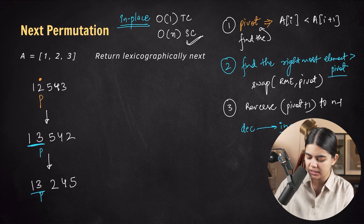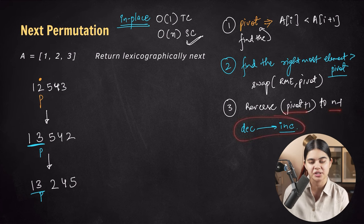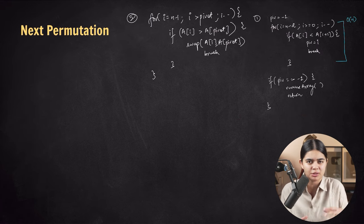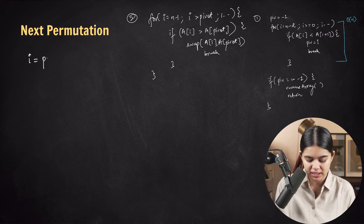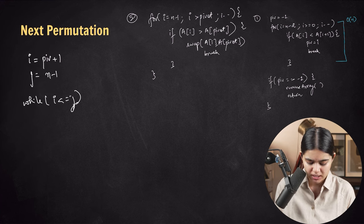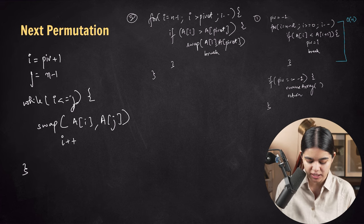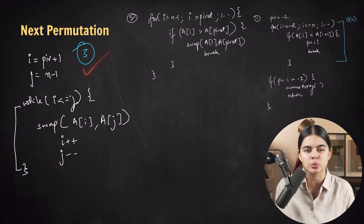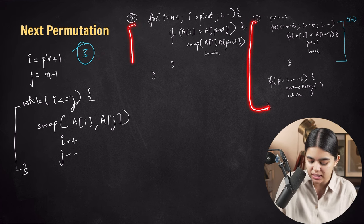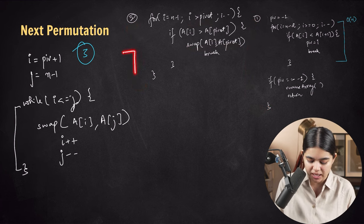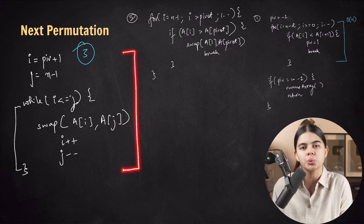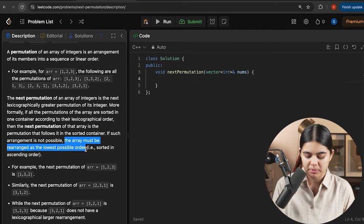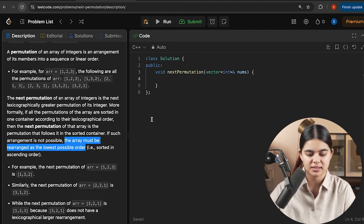Alternatively, we can use the built-in reverse function with begin pointer at array plus pivot plus 1. We write the complete three-step code on LeetCode. The pivot loop starts from n minus 2. Time complexity: each of the three steps is O(n), so overall time complexity is O(n) and space complexity is O(1).